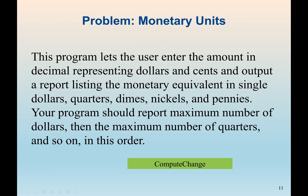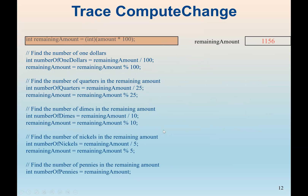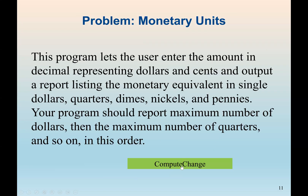Let's see an example of how C++ uses arithmetic operations and variables. This program asks the user to enter an amount in decimal representing dollars and cents, and outputs the monetary equivalent in single dollars, quarters, dimes, nickels, and pennies. For example, if the user enters $20.50, we calculate how many dollars, quarters, dimes, nickels, and pennies make up that amount. This means we have to use the modulus operator.